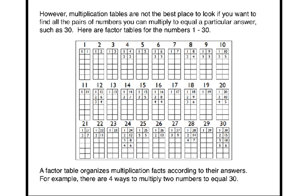A factor table organizes multiplication facts according to their answers. For example, there are four ways to multiply two numbers to equal 30.